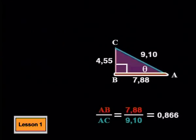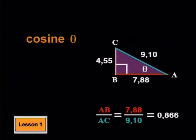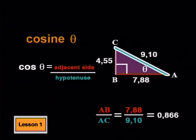If we calculate AB divided by AC in triangle ABC, we find another constant number. So we give this ratio the name cosine theta or cos theta for short. We define cos theta as the side adjacent to the known angle divided by the hypotenuse.